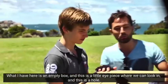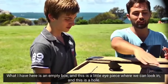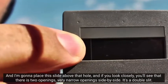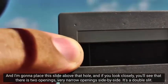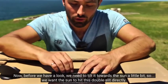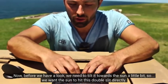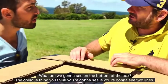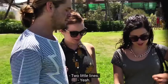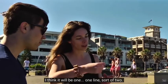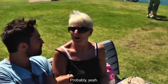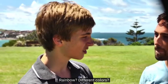We're doing a science experiment. What I have here is an empty box, and this is a little eyepiece where we can look in, and this is a hole. I'm going to place this slide above that hole. If you look closely, you'll see there's two openings, very narrow openings side by side. It's a double slit. Before we have a look, we need to tilt it towards the sun a little bit. We want the sun to hit this double slit directly. What are we going to see on the bottom of the box? The whole thing you're going to see is two lines on the bottom of the box. Two white bands.